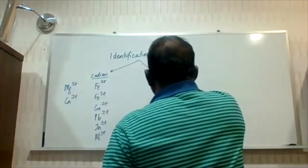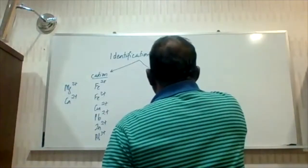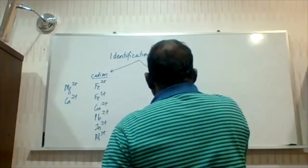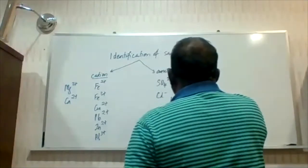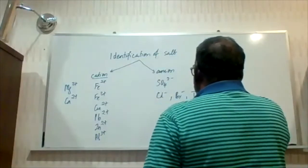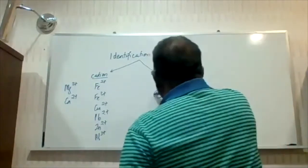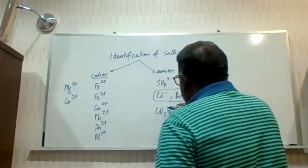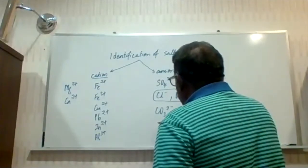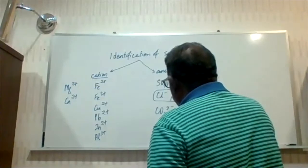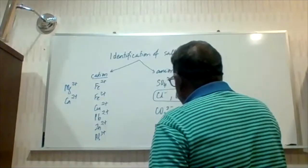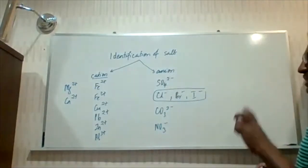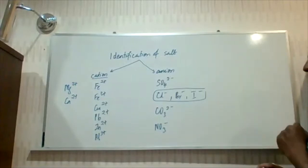For anions, the list is SO₄²⁻, Cl⁻ which includes Br⁻ and I⁻ as one package, then CO₃²⁻, and NO₃⁻. Basically, these are the anions that come under the list of identification.